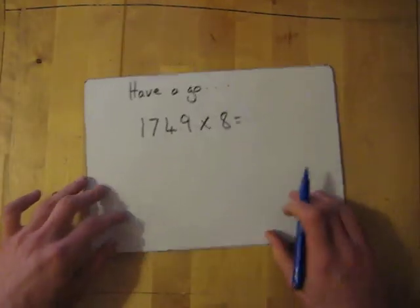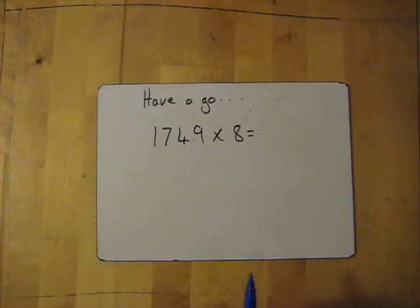Now, for one, for you to have a go at yourself, have a go. So 1,749 times 8. So if you want to pause this now and have a go, I'm going to go through the answers in 3 seconds. So 3, 2, 1, right.